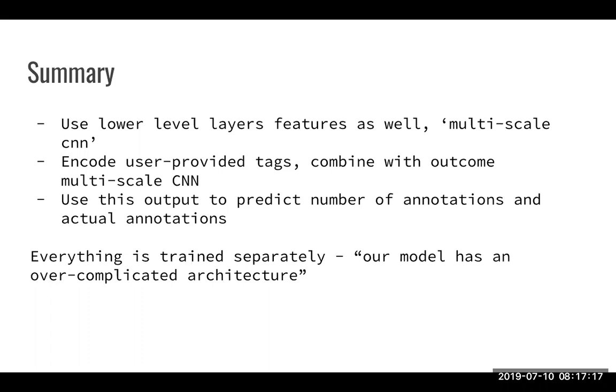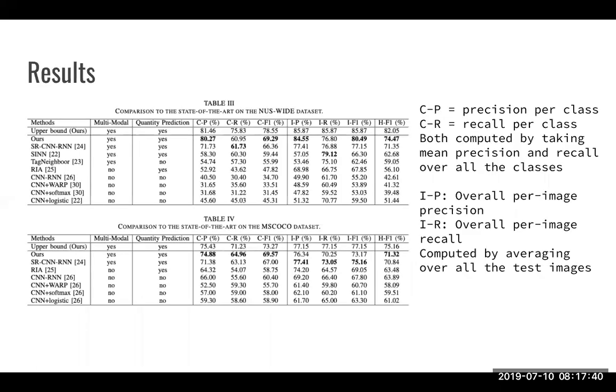One funny thing is that the authors know that everything is trained separately. So you can imagine that they just have four different Jupyter notebooks for each part of the network to get a final annotation. And they say themselves, they say, our model has an overcomplicated architecture, which is kind of true, just a lot of separate parts. But I don't know that the results are pretty good. Let's have a look at the results.